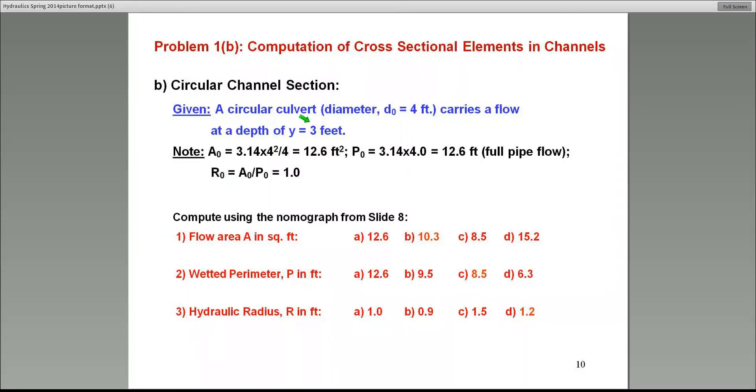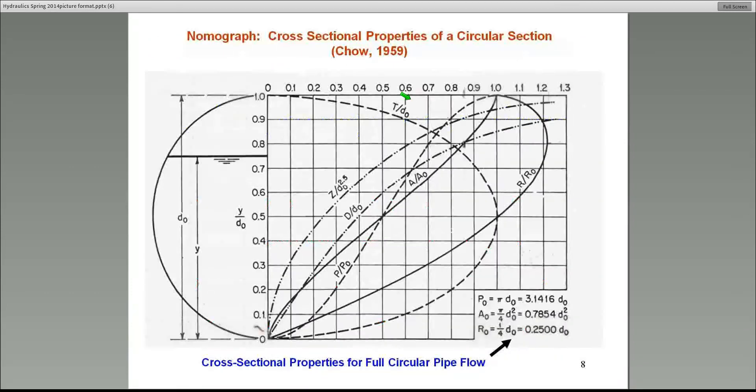The ratio of Y over D-naught, which is the full pipe diameter, which is in this case four feet. This ratio in my example happens to be 0.75. So if we go back to the nomograph that we had, it turns out to be the same point that I was showing you earlier. So we've already gone through that process, go across for the ratio of 0.75 and read where it intersects this curve A over A-naught labeled.